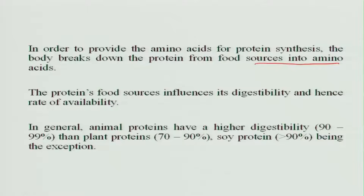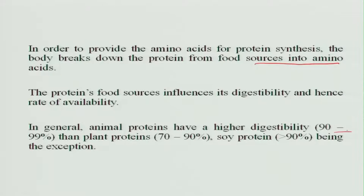In general, animal proteins have higher digestibility because animal muscle is similar to the muscle present in the human body. Therefore, the bioavailability of protein from animal sources is much higher — almost 90 to 99 percent of the protein consumed is bioavailable — whereas from plant sources only 70 to 90 percent is available, except for soy protein which is 90 percent available.